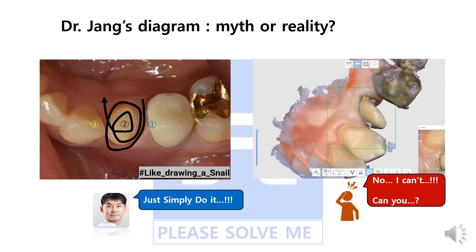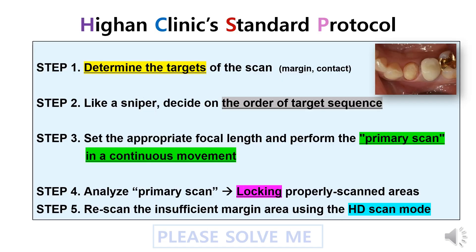We need more than just a diagram to standardize the scanning sequence, so we made a protocol that every staff member can understand. Step 1: Determine the target of the scan — margin, contact. Step 2: Like a sniper, decide on the order of the target sequence and focus on one target before going on to the next. Step 3: Set the appropriate focal length and perform the primary scan in a continuous movement as uninterrupted as possible. Step 4: Analyze the primary scan to see which areas need supplementary scans. After locking properly scanned areas, focus only on areas with insufficient data using HD scan mode.